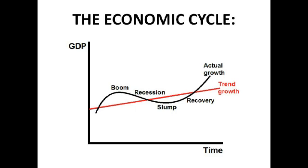Booms are when we have an increase in output and economic growth — employment is high, but firms can struggle to recruit labour. That's why immigration is helpful, as more workers come in to fill gaps. In a boom, if demand increases much faster than supply, we get rapid inflation as excess demand pushes prices up. We can also get a balance of payments deficit because rising incomes drive demand for imports, so we're importing more than we're exporting.